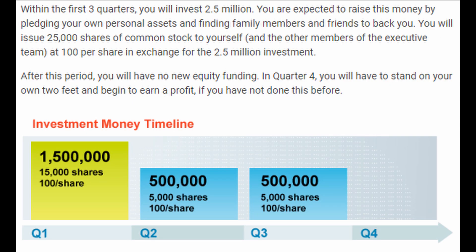In order to provide the seed capital, your executive team will invest money in your own firm by selling stocks to yourselves. You will invest $1.5 million in the first quarter, and then another $500,000 in each of the next two quarters.